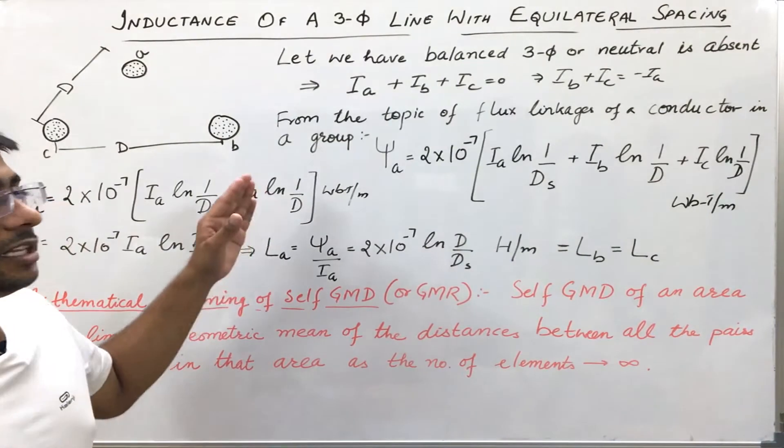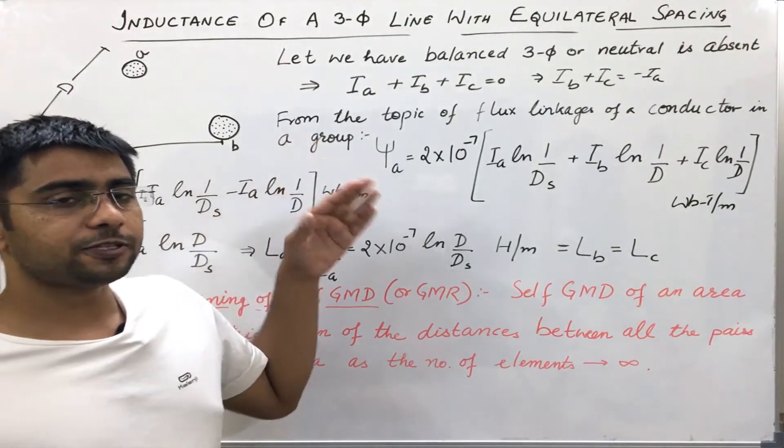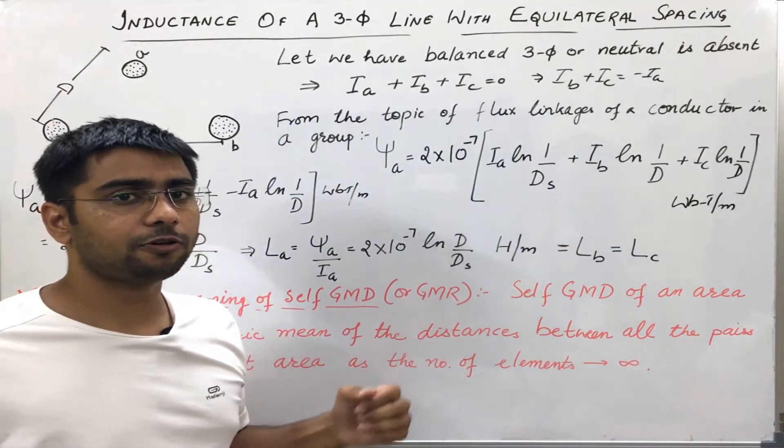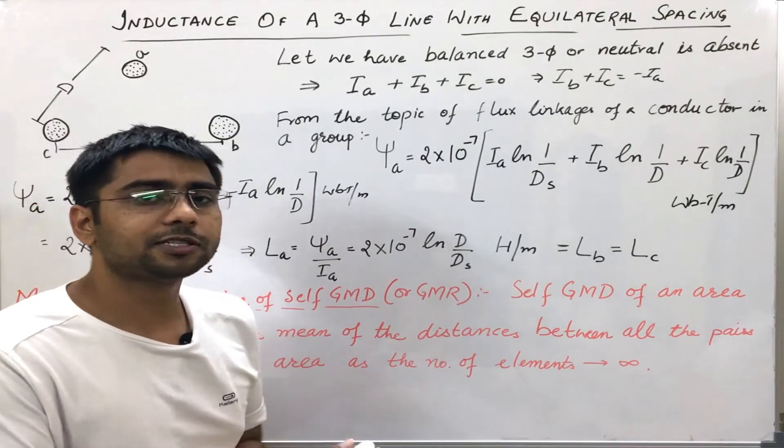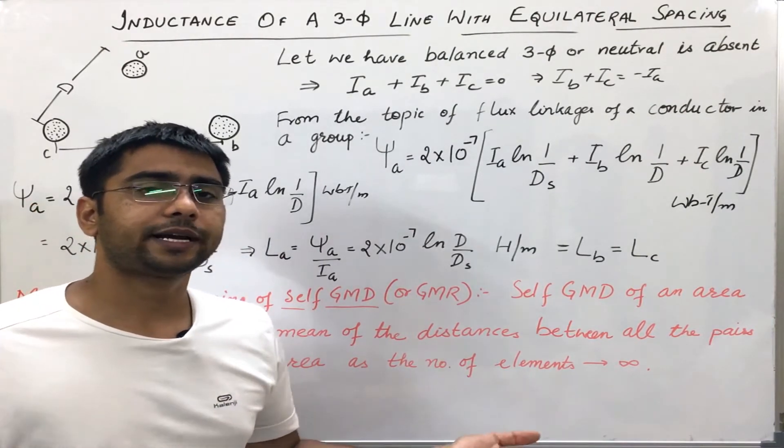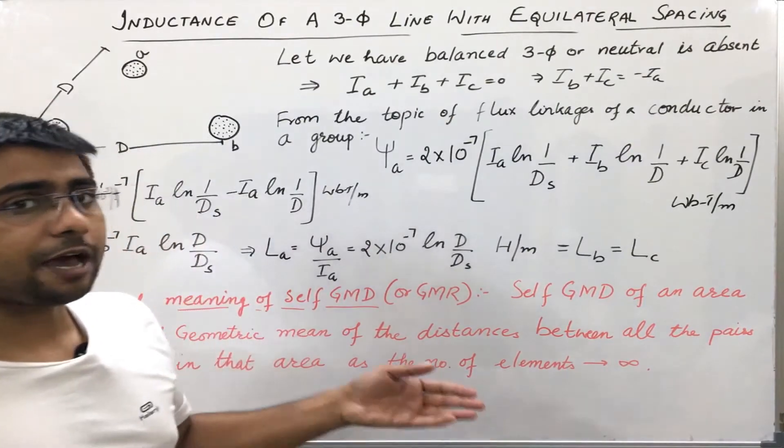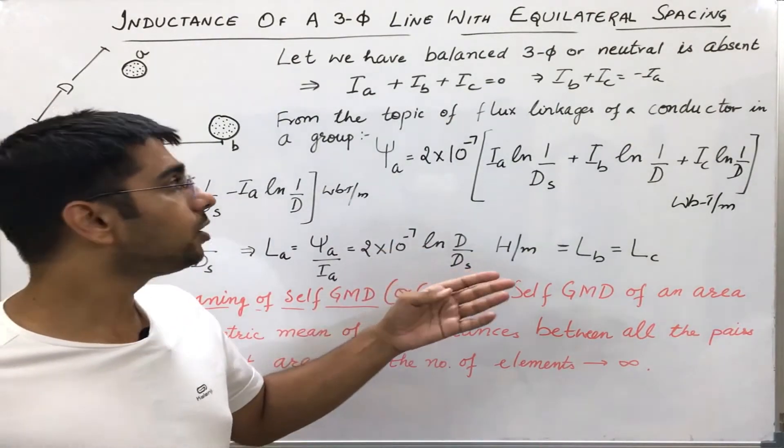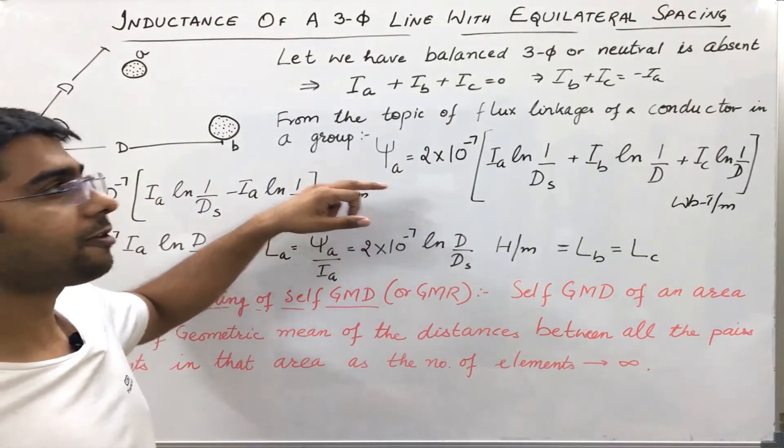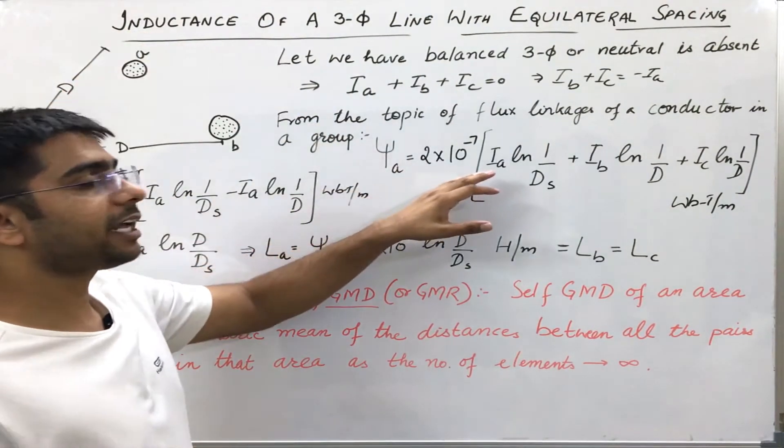In the previous videos we have seen how to calculate the flux linkages of a conductor if it is surrounded by many conductors carrying current. We have used the same formula here to find the flux linkage of conductor A.